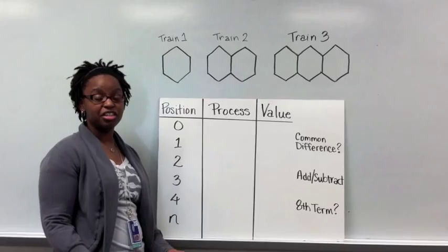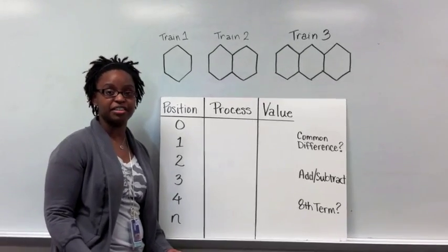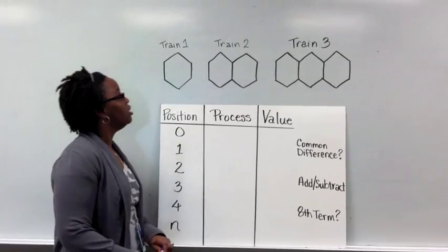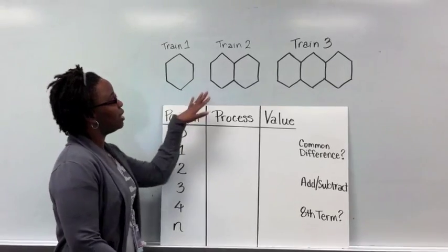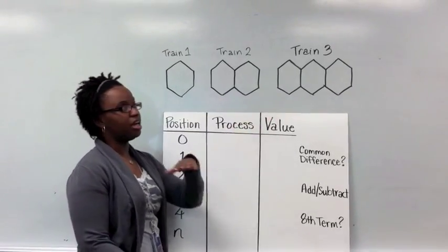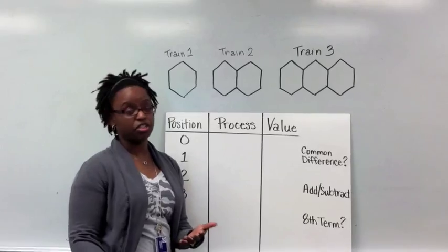Alright, so our first examples should look familiar from the pattern train activity that you did in class today. We've got some different hexagon trains here and we're looking at the perimeter for each train.